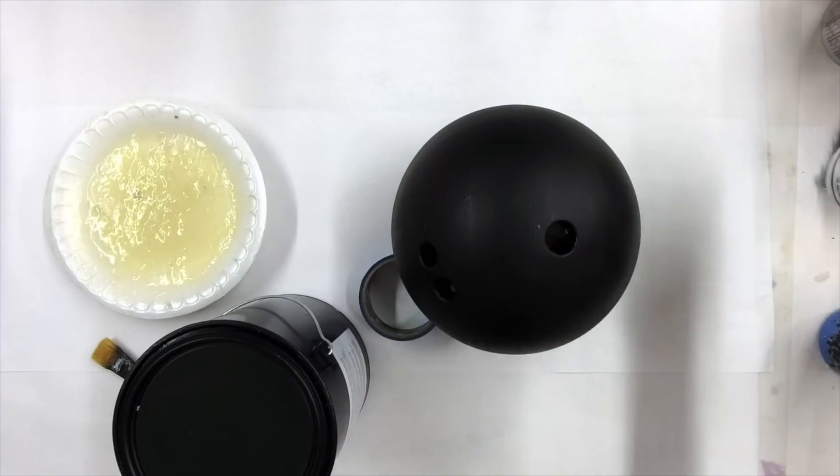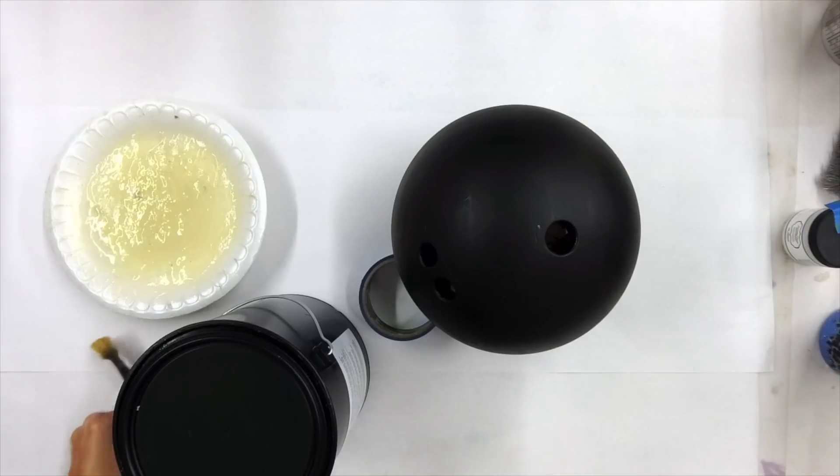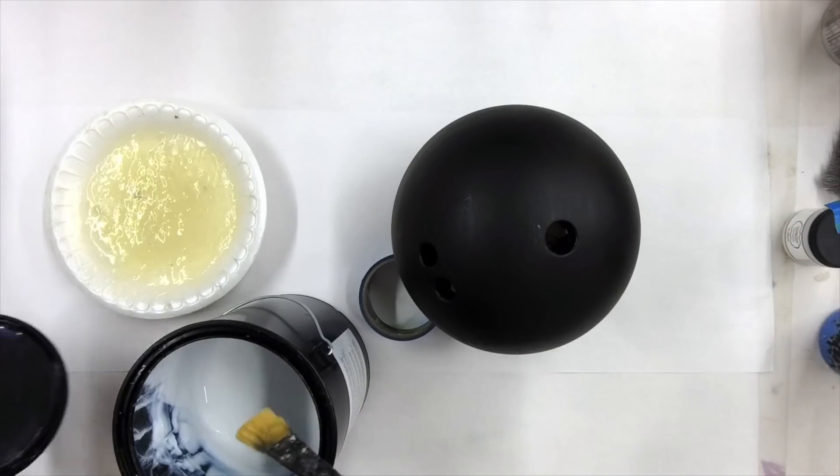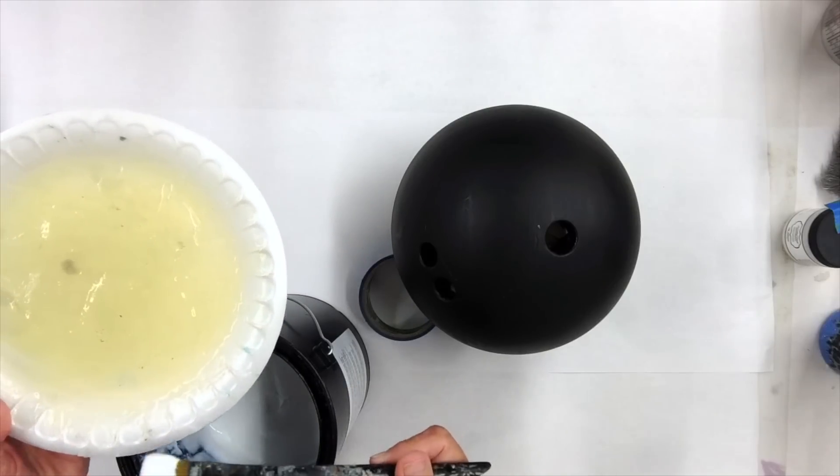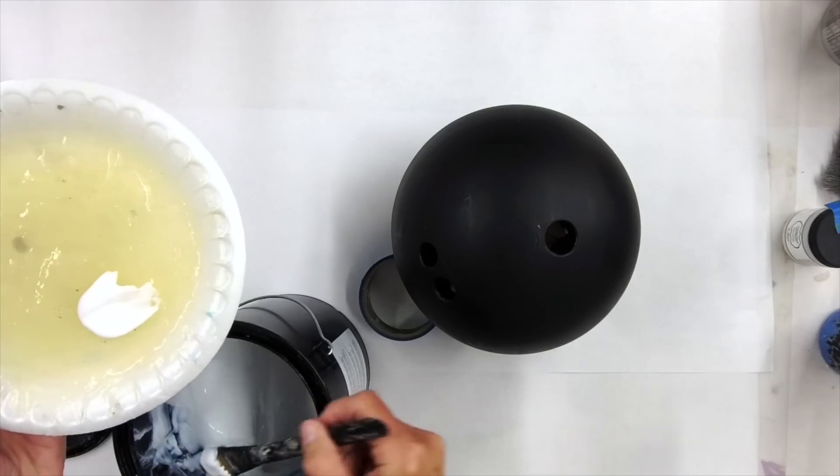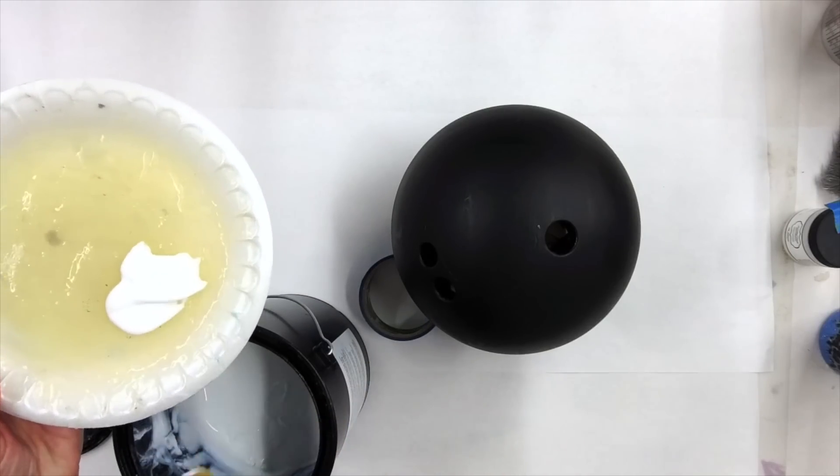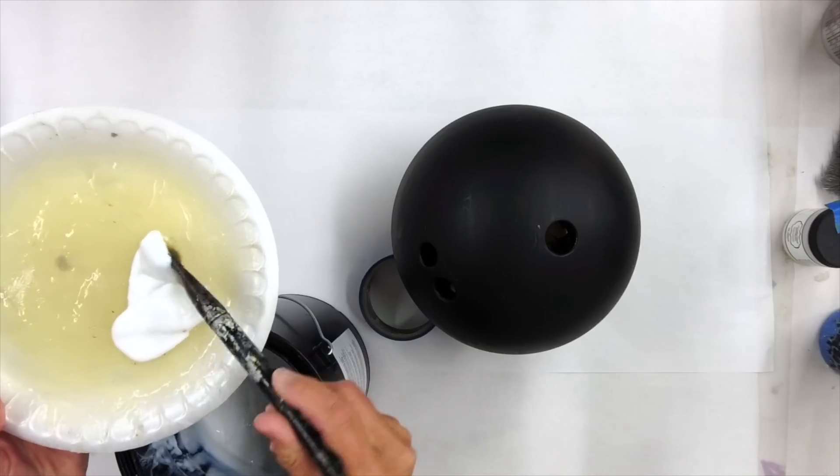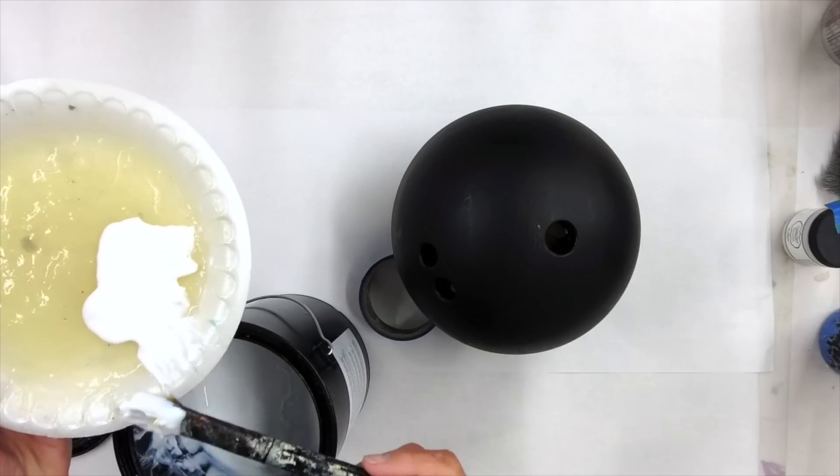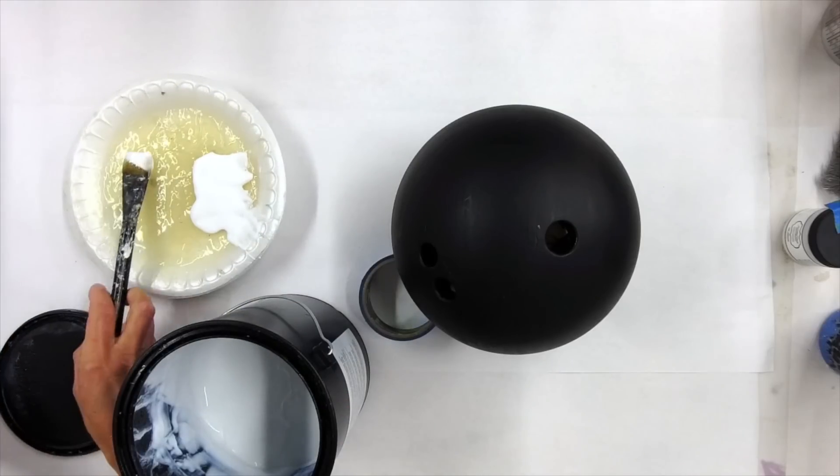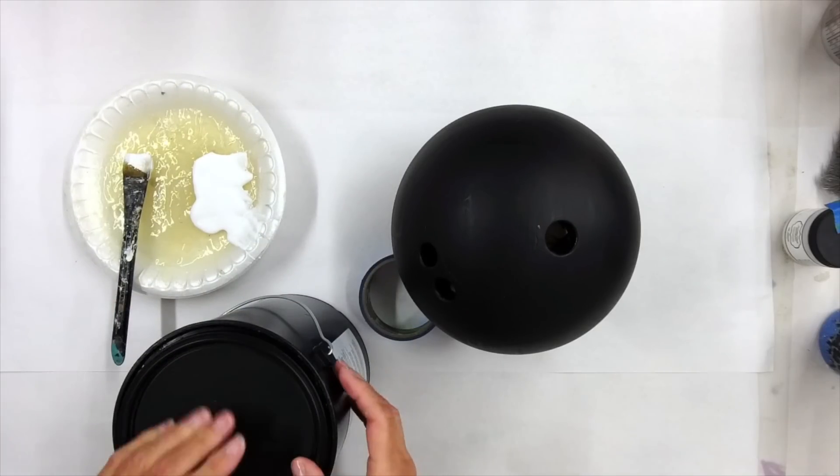We have four ounce, ten ounce quarts and gallons depending on the size of your project. I prefer to take it out of the bucket and put it on what I call a sticky plate. So this plate just has layer after layer after layer of foil adhesive on here.